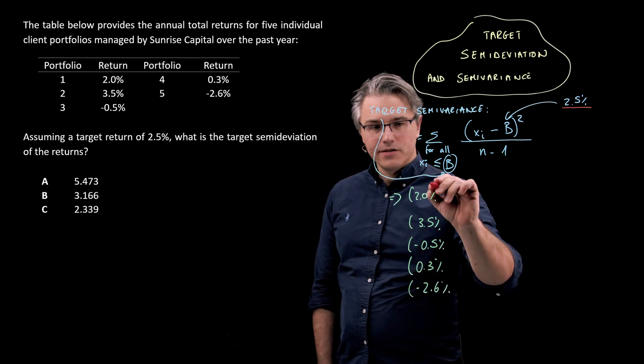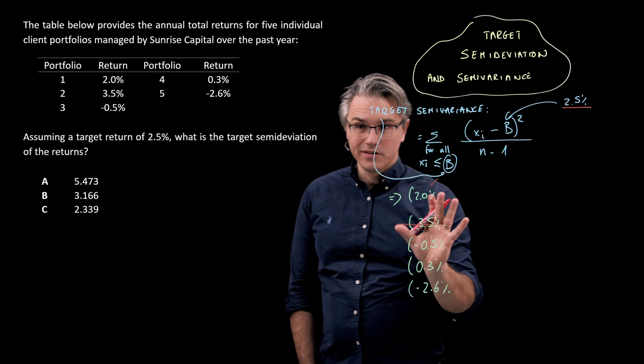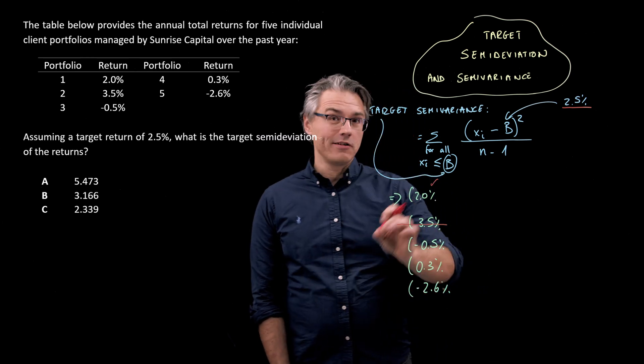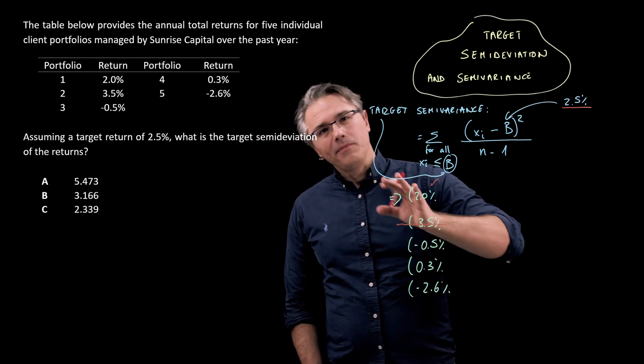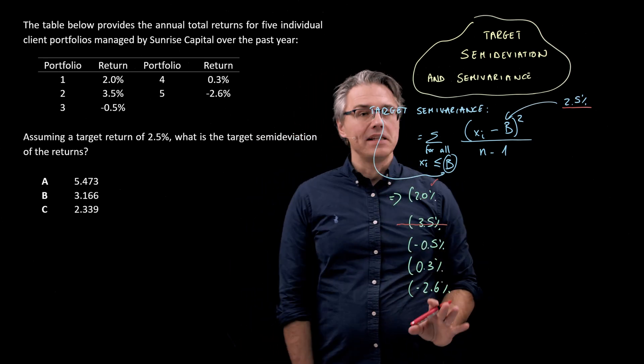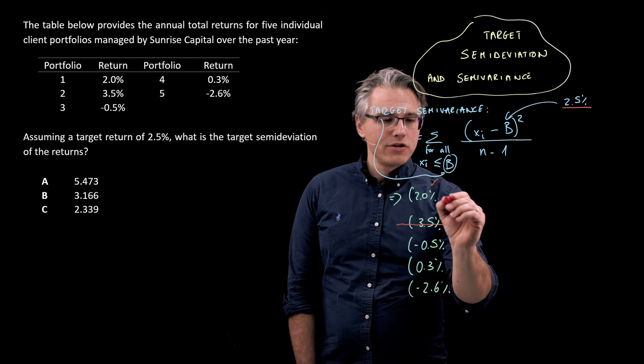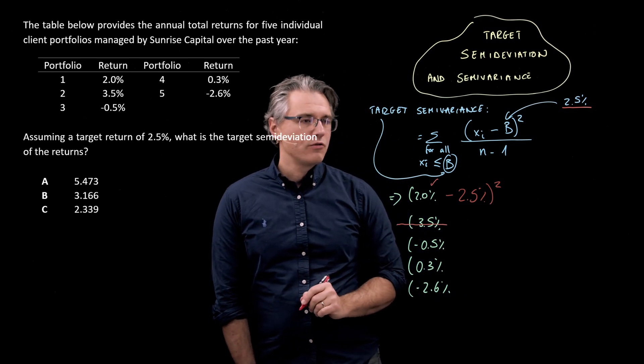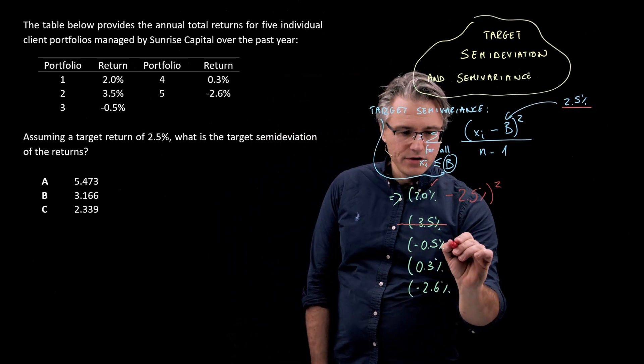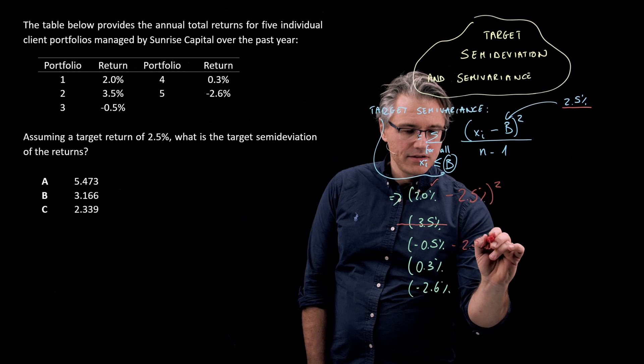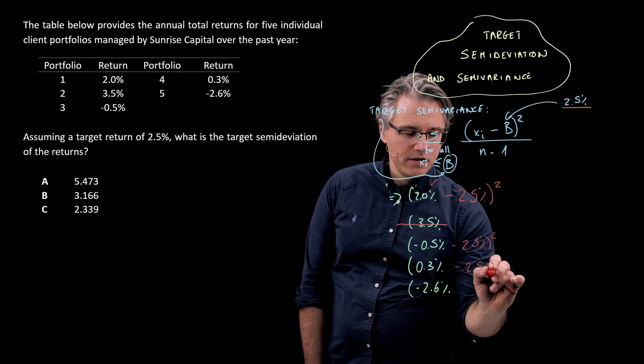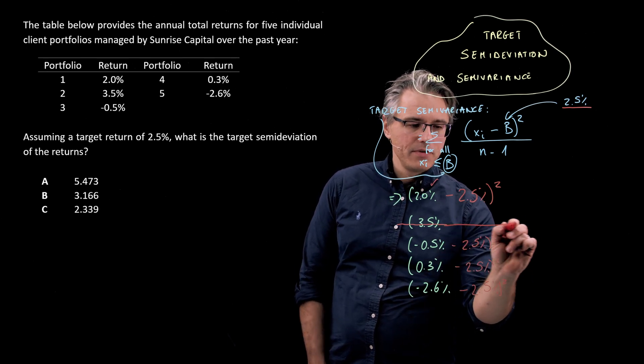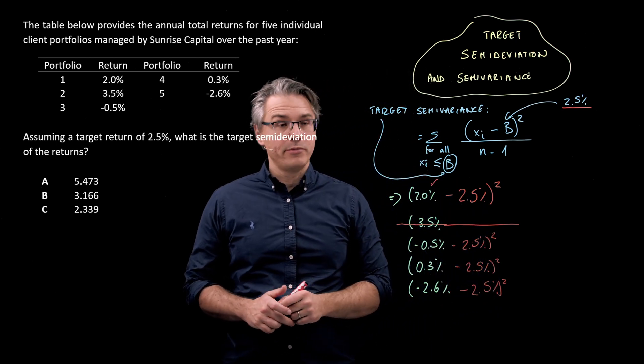So essentially, I'm going to have this one. I'm going to completely ignore this one. So crossing it out intentionally, just so that you see that I'm not actually using everyone. Focusing only on the ones which lie below the 2.5% target, and for these, computing the square of that deviation. 2% minus 2.5% squared, minus 0.5% minus 2.5% squared, 0.3% minus 2.5% squared, and minus 2.6% minus 2.5% squared, but not for the 3.5%. This one is completely irrelevant, so effectively out of the 5, I'm only using 4.